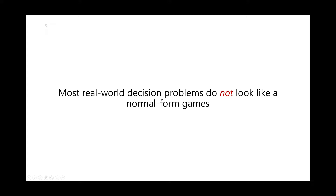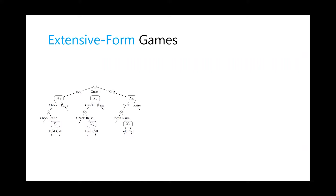If you take these two ideas together — acting more than once (turn-taking) and partial observability — you end up with a different model called extensive form games. As a canonical example, just as we use rock paper scissors for normal form games, for extensive form games I'll use poker. Interestingly, when von Neumann started game theory, poker was actually the game they wanted to solve.